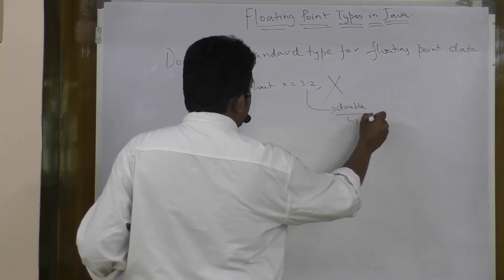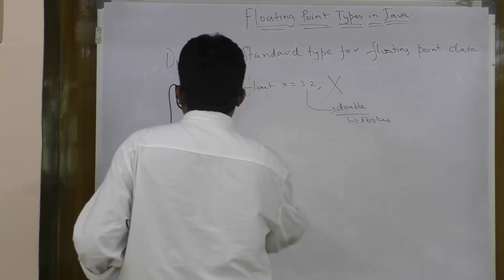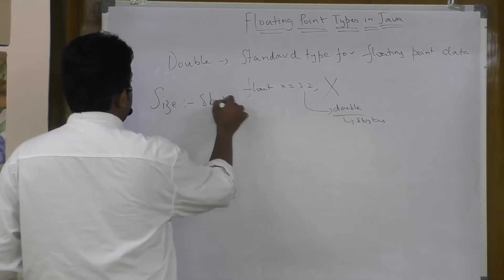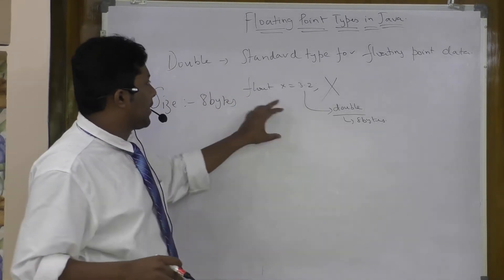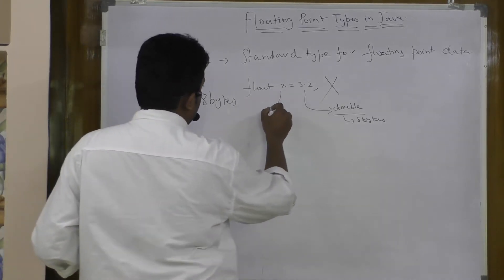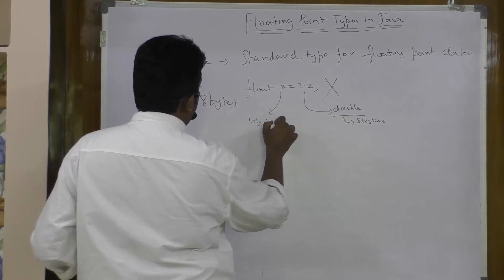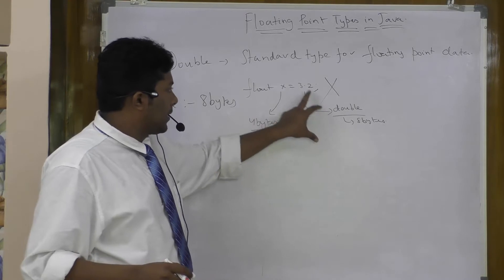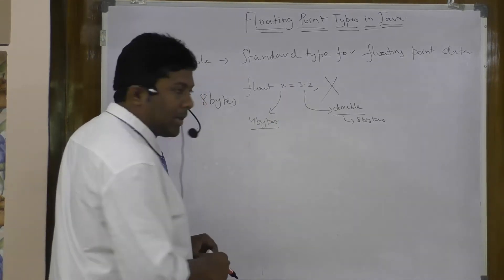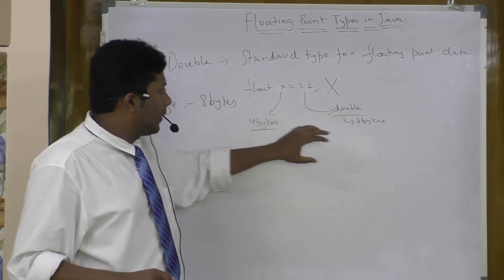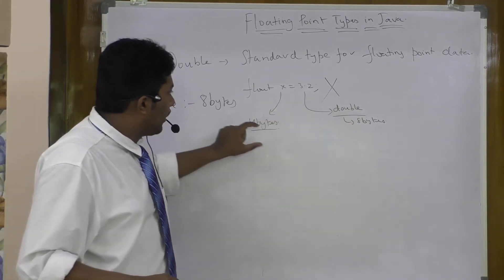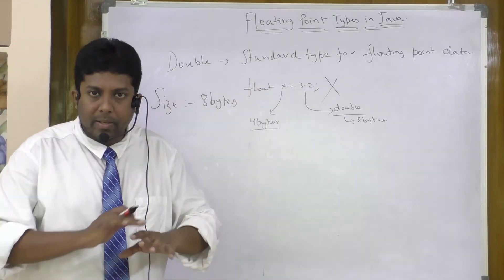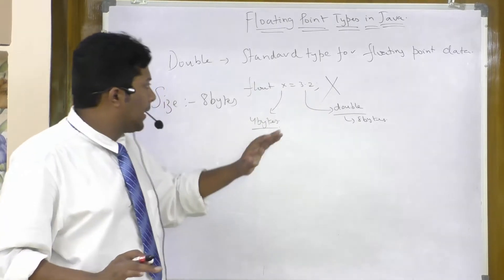Which is of size 8 bytes. Size of double type is 8 bytes in size. And how in the world you can assign an 8 byte data into a 4 byte variable? This is not possible because Java is considered as strongly typed language, which is very strict about type checking.